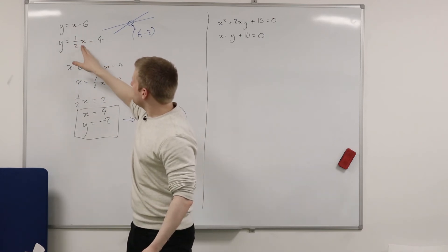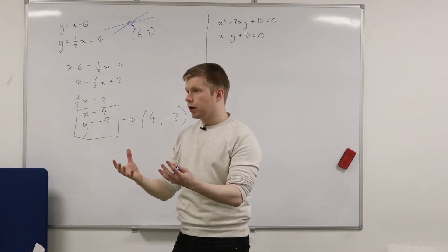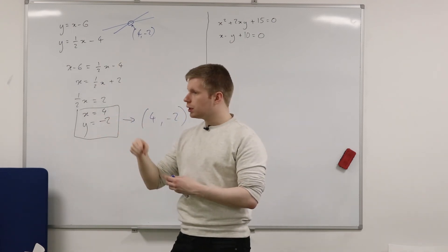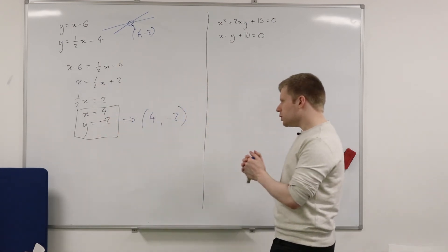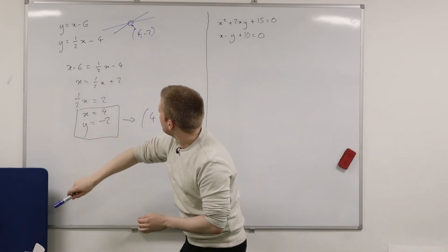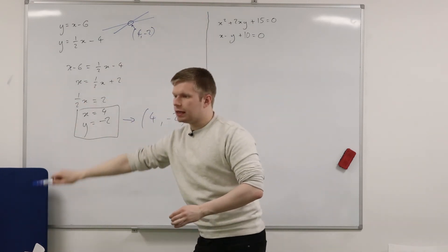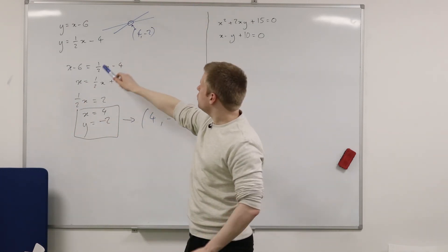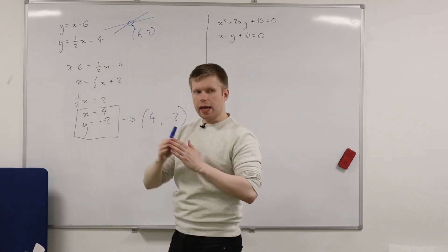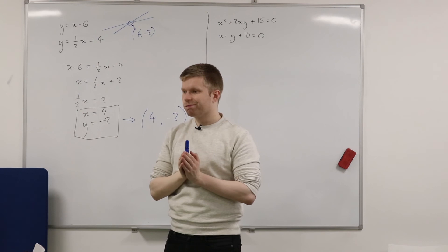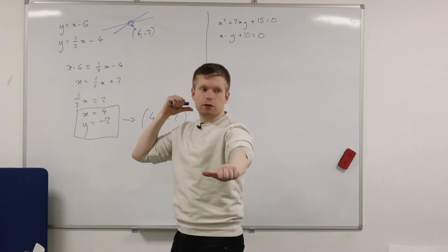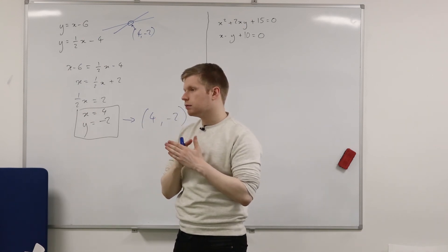Firstly, you notice both of these equations are linear. So it means the highest power is 1, so therefore we're expecting one solution. But also, look at the graphs. Would you be happy Y equals X minus 6 will carry on going forever and ever in each of these directions? Would you be happy Y equals a half X minus 4 will carry on going in each of those directions? So will they ever meet again? No. It's quite sad. They only meet once. That's it. Because they shoot off then in different directions. Does that make sense?